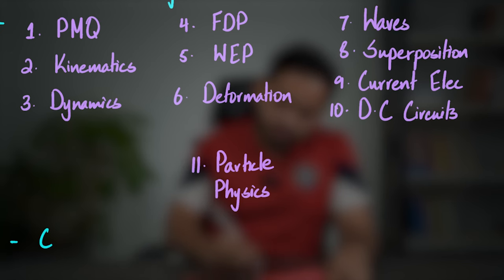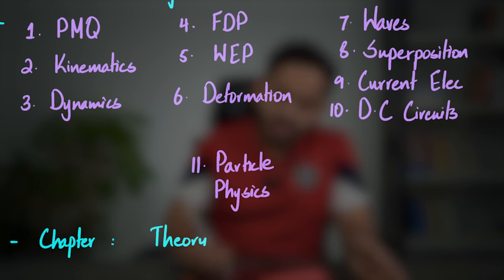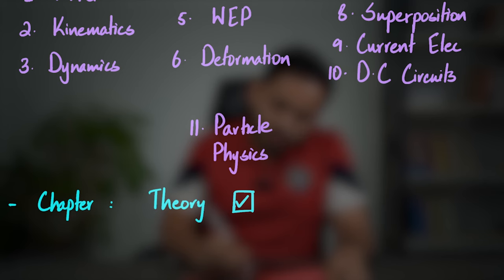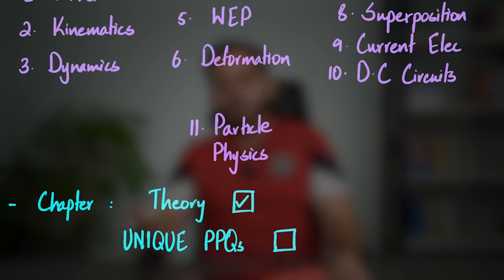You should do one topic at a time. For each chapter, once you've completed the theory — gone through all the lectures and videos and feel solid on it — the next step is to sit down and pick out unique past paper questions from recent years. By unique, I mean questions that differ in what they ask and how they approach a certain type of question.